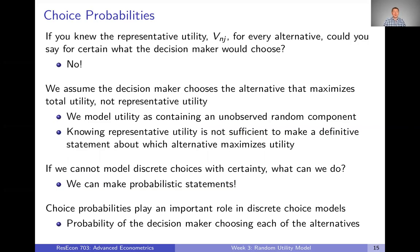Let's start with a thought experiment. Suppose I set up a discrete choice problem for you, and I told you exactly what the representative utility of every single alternative was — that capital V, the representative utility, the utility that comes from observed attributes. Suppose I told you what that was for every single alternative for some decision maker. Would you be able to say with certainty what the decision maker would choose? The answer is no.